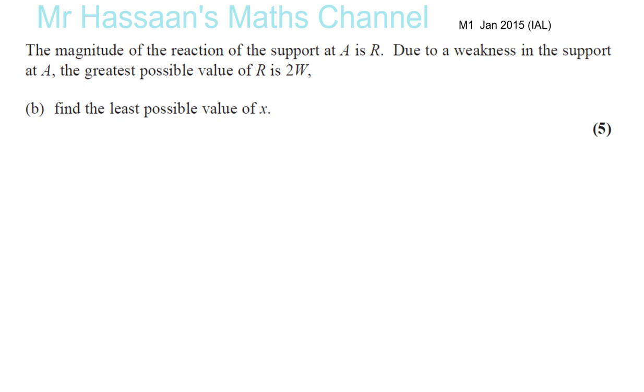Okay, so we now have part B from question number 6 in 2015. This is question number 6. The magnitude of the reaction of the support at A is R. Due to a weakness in the support at A, the greatest possible value of R is 2W. Find the least possible value of x.